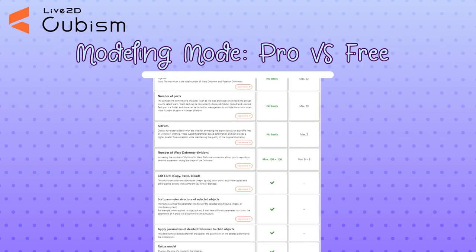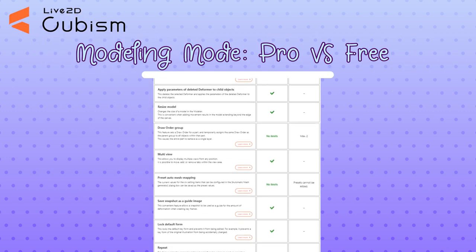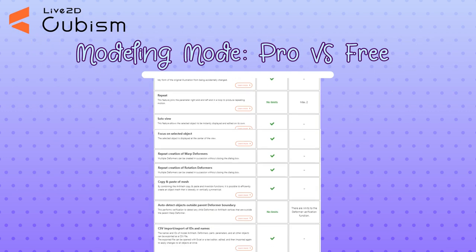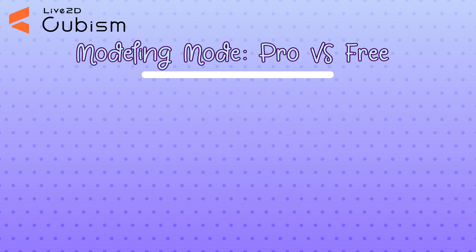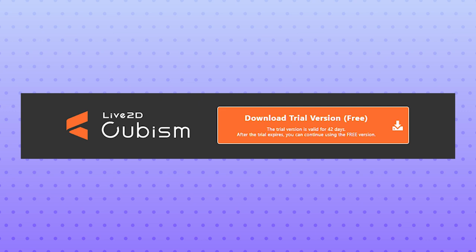There are currently two versions: free and pro. A comparison chart is linked in the description. For those who want to taste the pro version but don't want to commit to the subscription yet, there is a 42-day free trial you can activate, allowing you temporary access to all the features.